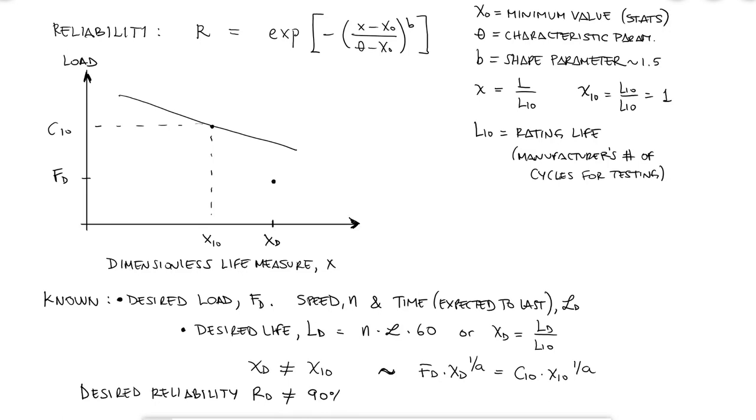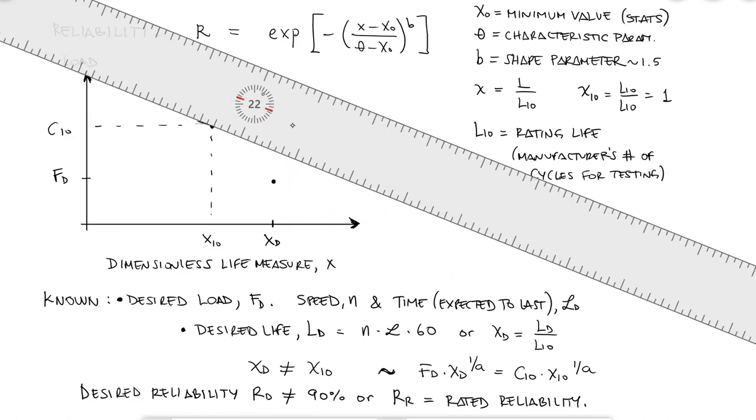To be fair, this is not exactly what's going to happen, but having a 90% reliability does mean that there's a 10% chance that my bearing will fail before it reaches the number of cycles I want it to reach. So if for example I'm trying to have a 95% reliability, I know that the manufacturer's rated line, on which X10 and C10 are located, is a parallel line to the line my desired life and desired load are located on.